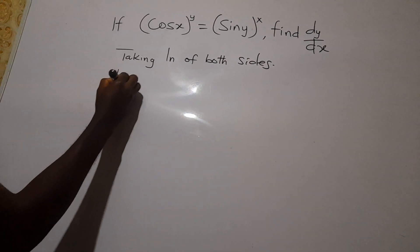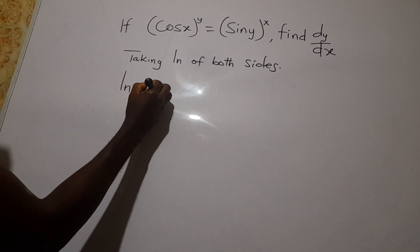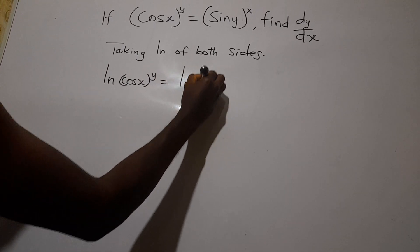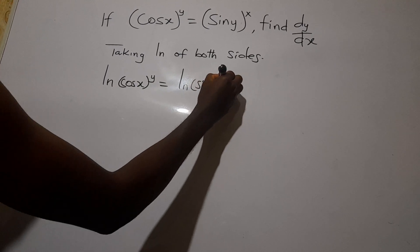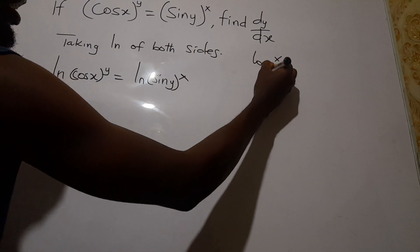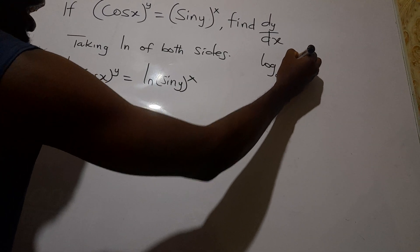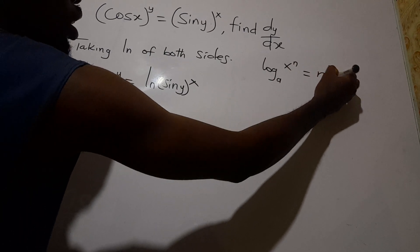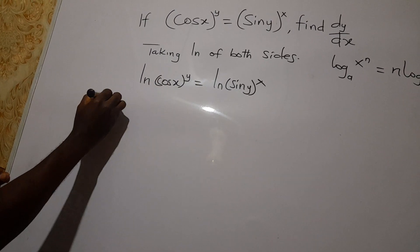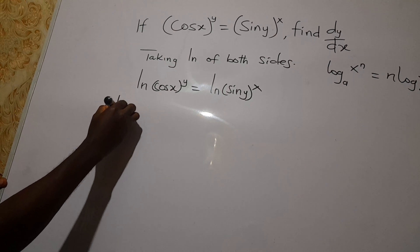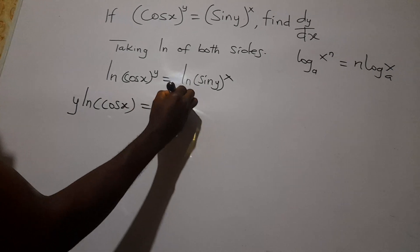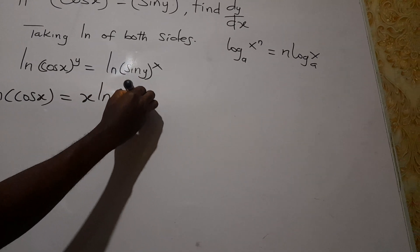Taking ln of both sides, we have ln(cos x)^y = ln(sin y)^x. Remember, if we have log x^n base e, it equals n·log x base e. So applying that rule, this becomes y·ln(cos x) = x·ln(sin y).